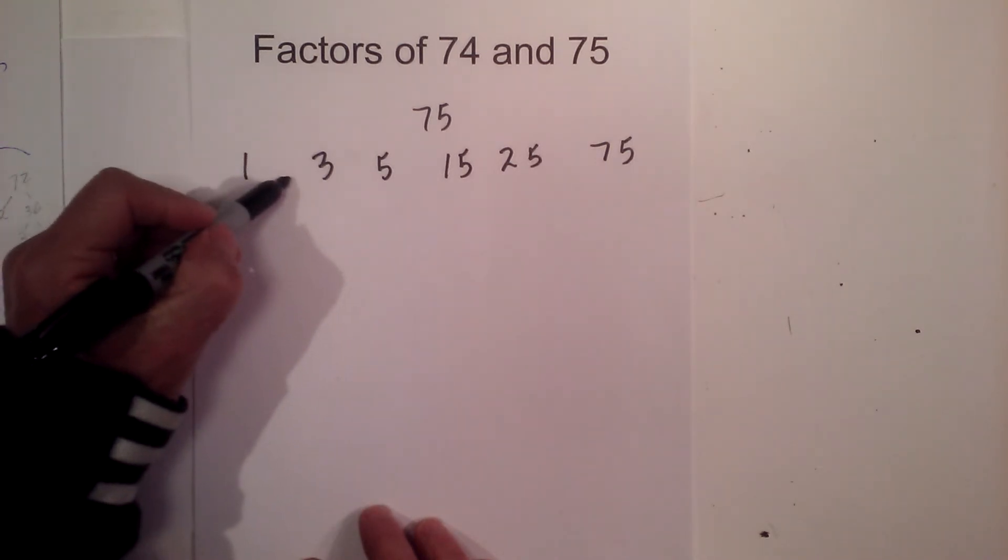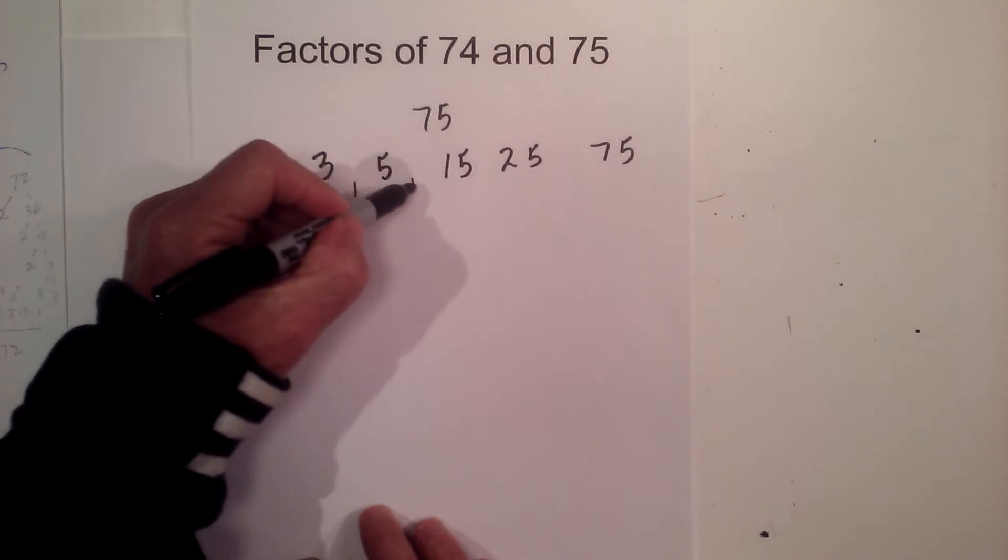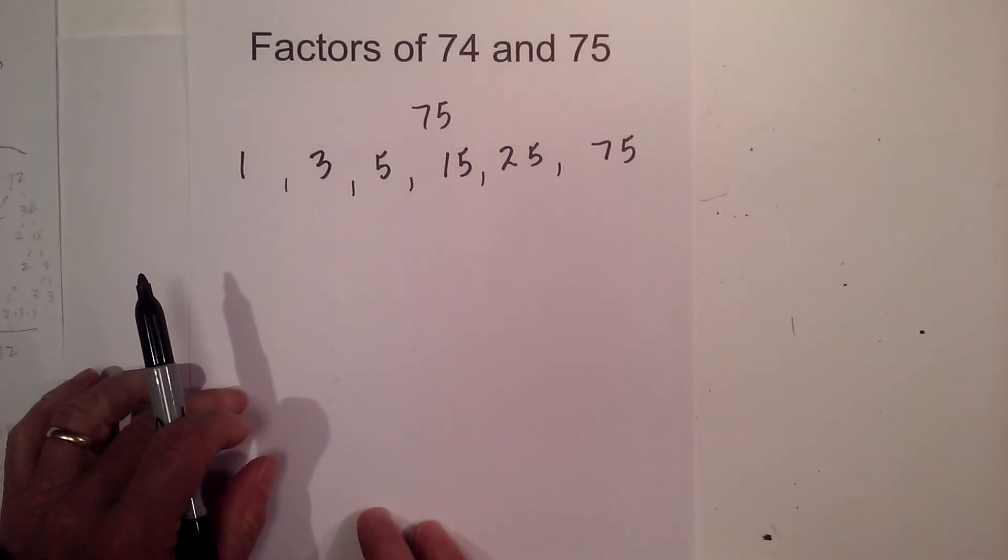So the factors for 75 are 1, 3, 5, 15, 25, and 75.